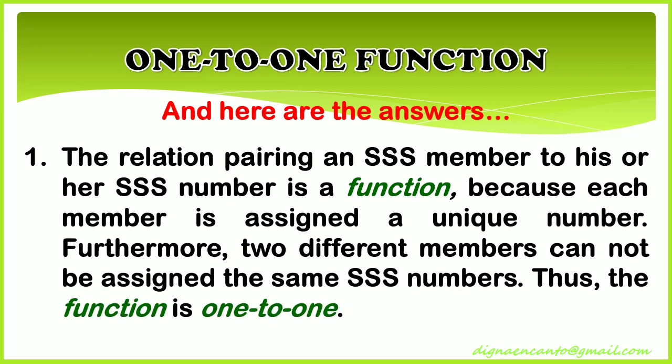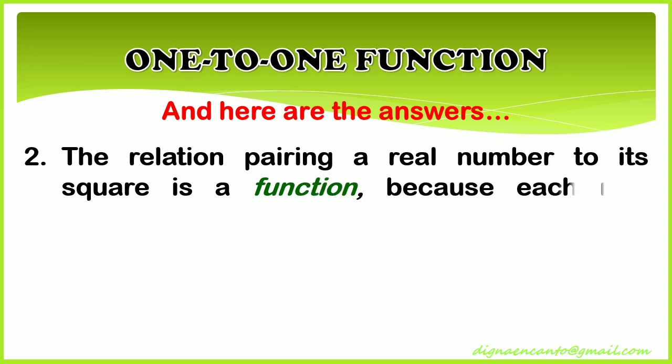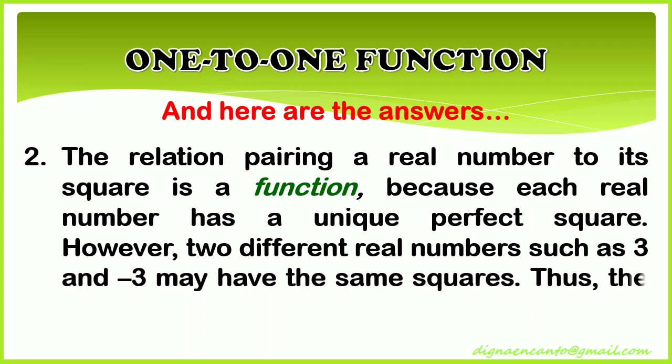The relation pairing a real number to its square is a function because each real number has a unique perfect square. However, two different real numbers such as three and negative three may have the same squares, thus the function is not one-to-one.